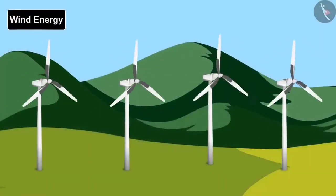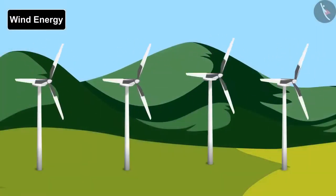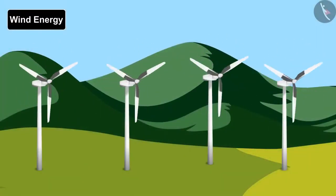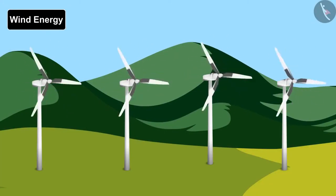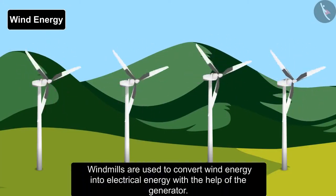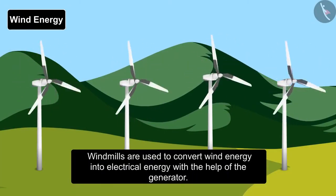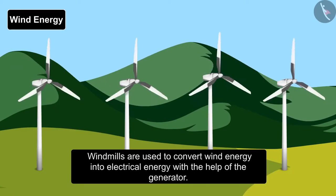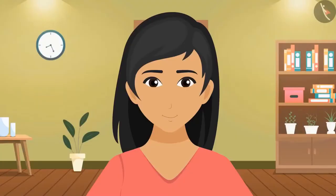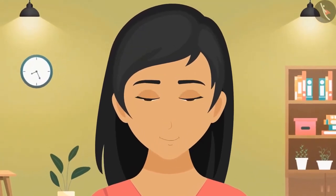The last conventional source of energy is wind energy, which can be harnessed where wind flows swiftly. Large wind turbines are used to convert wind energy into electrical energy with the help of a generator. We have covered many conventional sources of energy, and in our next video we will learn about non-conventional sources of energy.